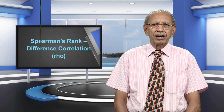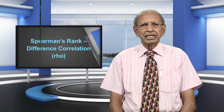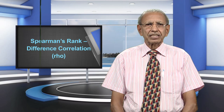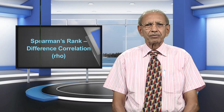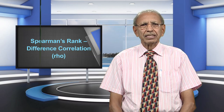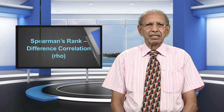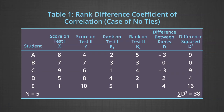The assumption of normal distribution of the characteristic in the population is not required. The procedure of calculation of Rho is shown in Table 1, which is about the rank difference coefficient of correlation where there are no ties. The table has seven columns.